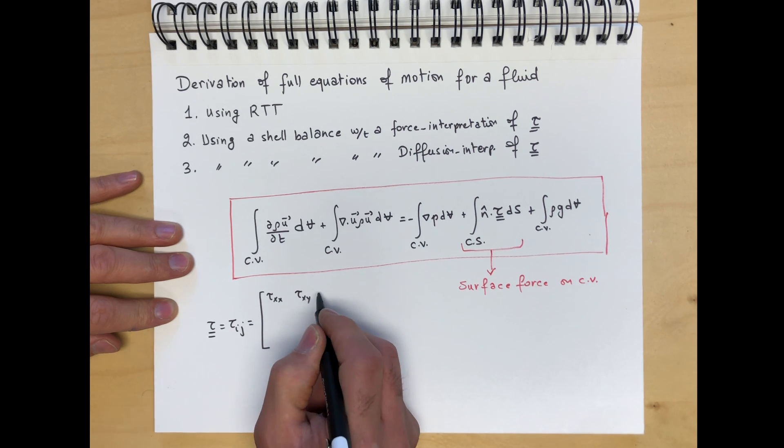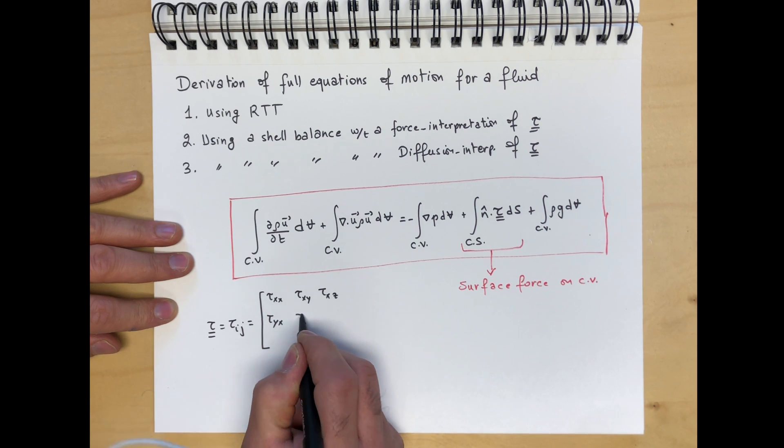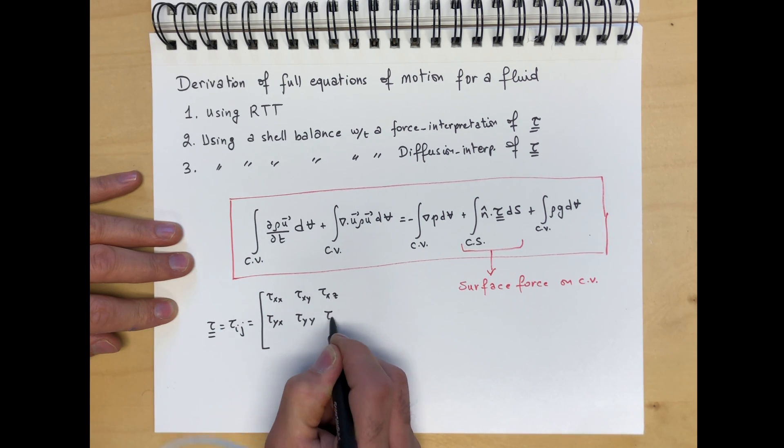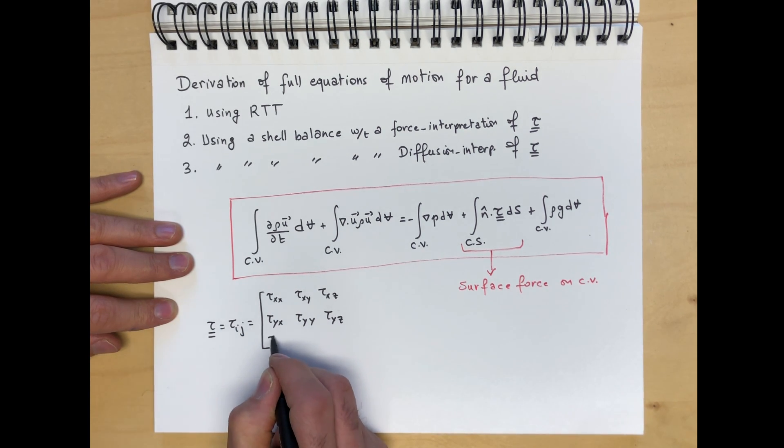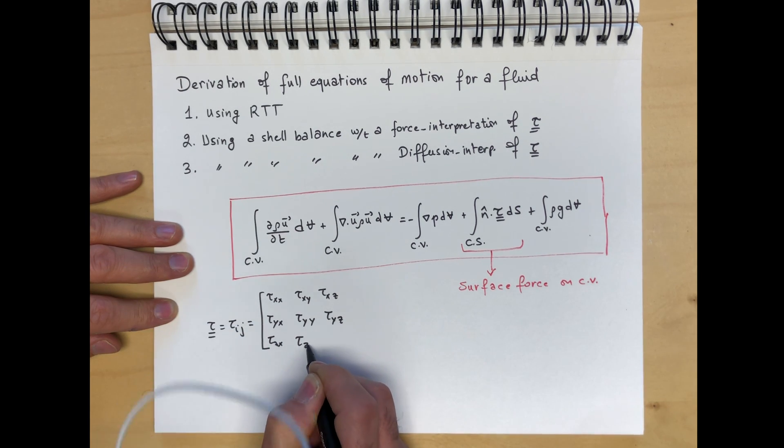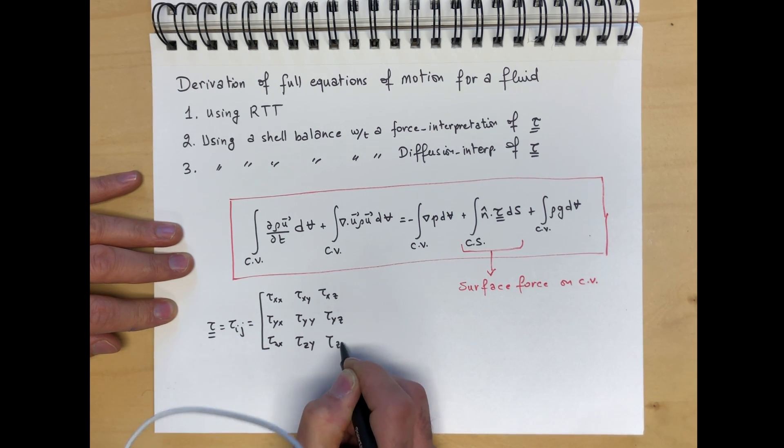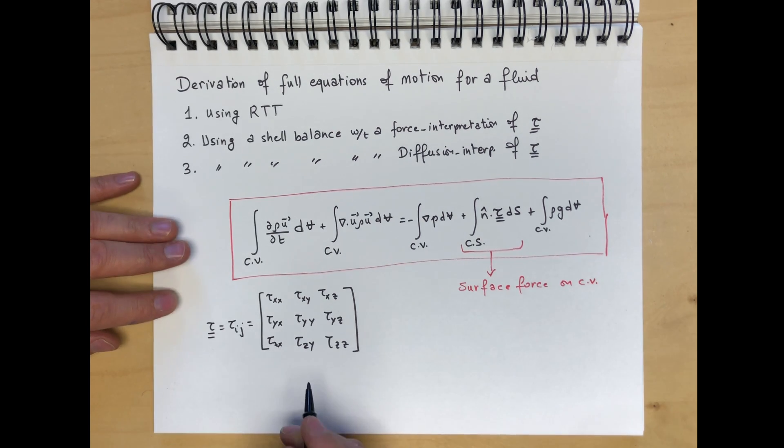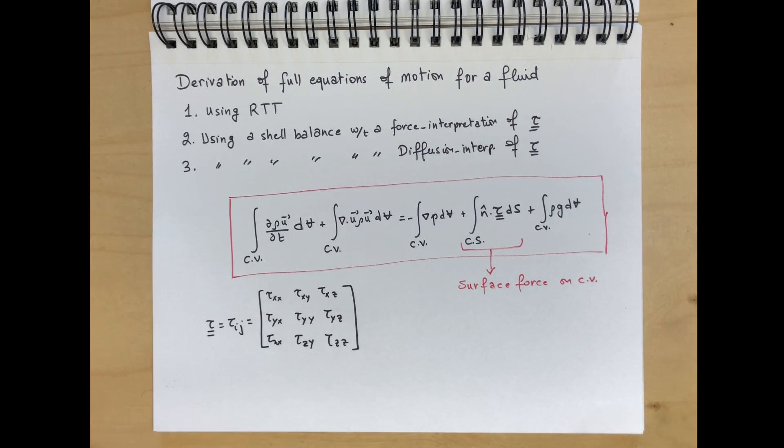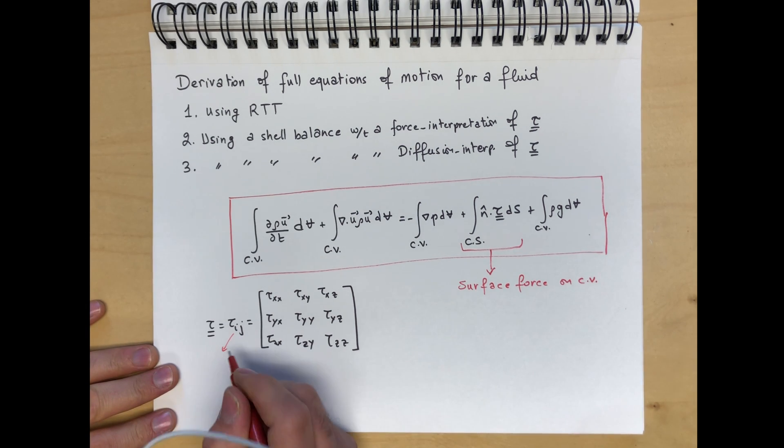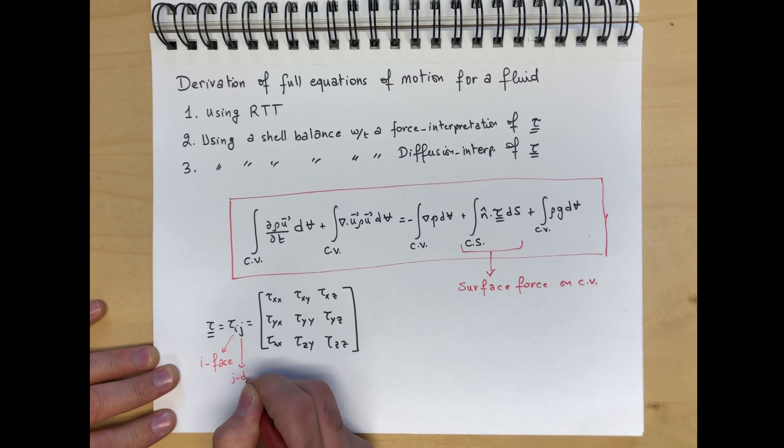We wrote this as tau xx, tau xy, tau xz, tau yx, tau yy, tau yz, tau zx, tau zy, and tau zz. The first index describes the face, so this is the stress or the force per unit area acting on an i-face in the j-direction.